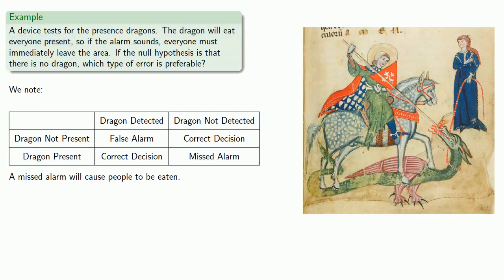On the other hand, a false alarm occurs when a dragon is not present, but the alarm goes off anyway. And if the alarm sounds, everyone must immediately leave the area, so a false alarm will cause people to leave the area.